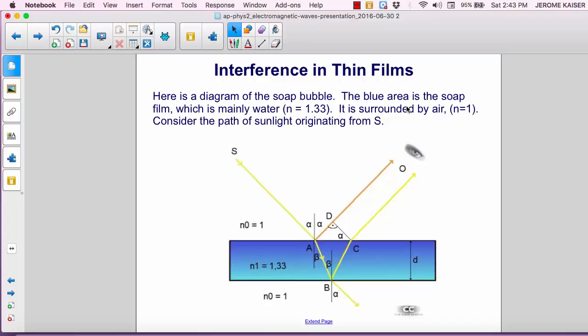It's surrounded by air inside and outside the bubble with an index of refraction of n equals 1. So consider the path of sunlight originating from point S over here, passing onto the surface of the bubble and reflecting, and also passing into the bubble and reflecting from the inner surface and back to the observer.